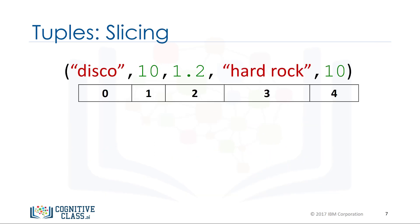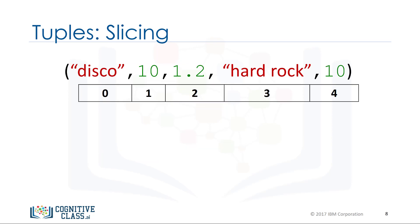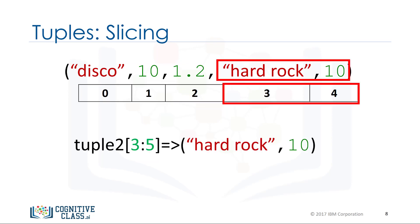If we would like multiple elements from a tuple, we can also slice tuples. For example, if we want the first three elements, we use the following command — the last index is one larger than the index you want. Similarly, if we want the last two elements, we use the following command. Notice how the last index is one larger than the length of the tuple.